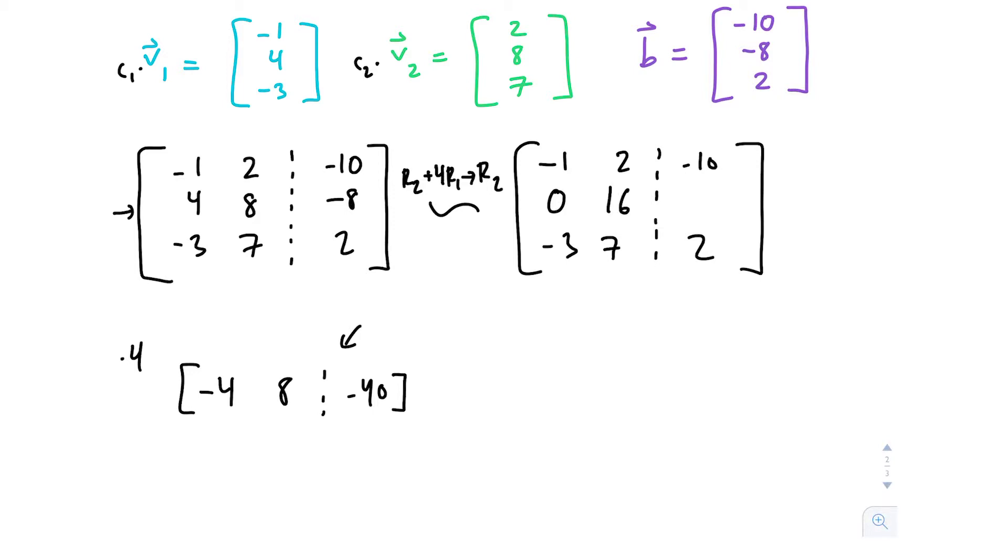We still have one more row that has a leading term that we don't really want. We want to simplify as much as possible. So I'm going to use that negative 1 again, but this time I'm going to multiply it by negative 3 so that the 3 and negative 3 will cancel out. Multiply that entire row by negative 3, we're going to get 3, negative 6, 30.